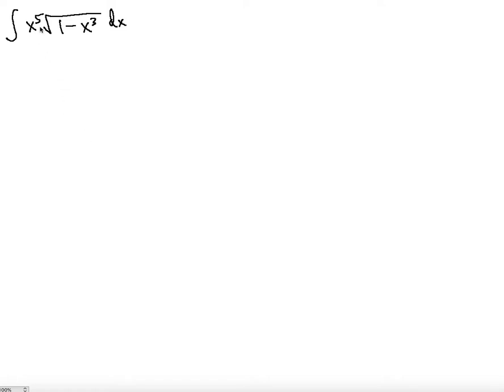You want to take the antiderivative of x to the fifth multiplied by square root of 1 minus x to the third dx. There are no fractions here, so your hint is the square root.